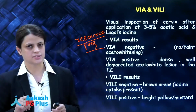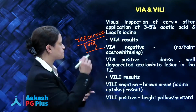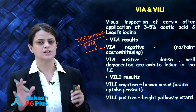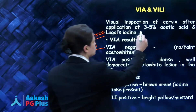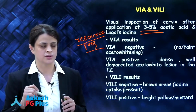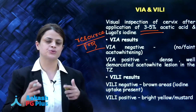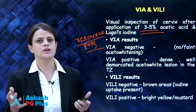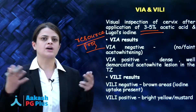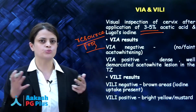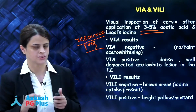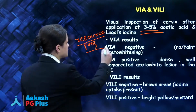Healthcare workers can screen out high-risk women and send them to a higher center for further management. In VIA, you examine the cervix with the naked eye and smear the cervix with three to five percent acetic acid solution. The principle of VIA is that acetic acid produces a reversible coagulation of the nuclear proteins. Pre-malignant and malignant cells have a high nuclear-cytoplasmic ratio, so more nuclear proteins, so they take up the acetic acid to produce a dense aceto-white lesion.